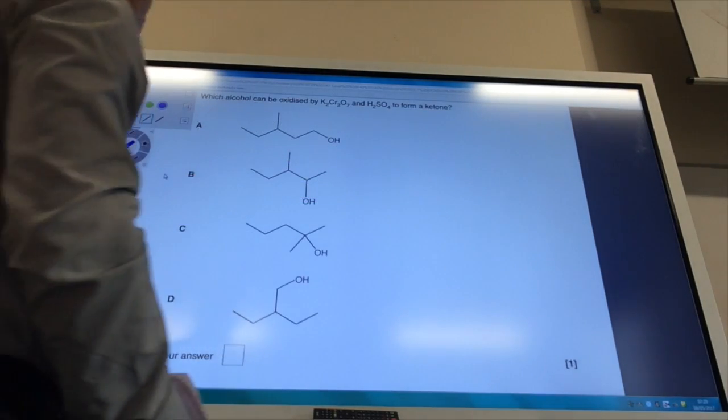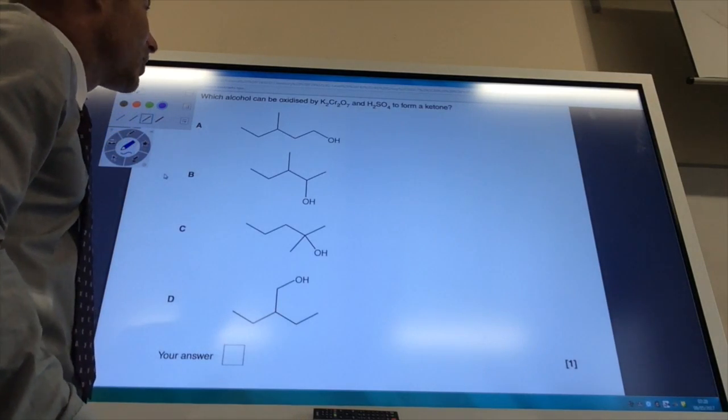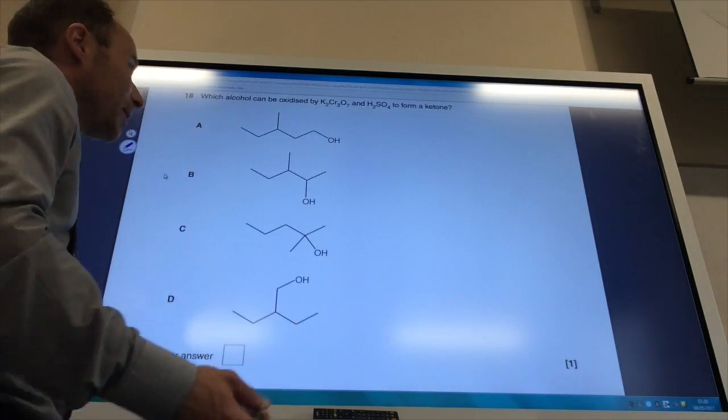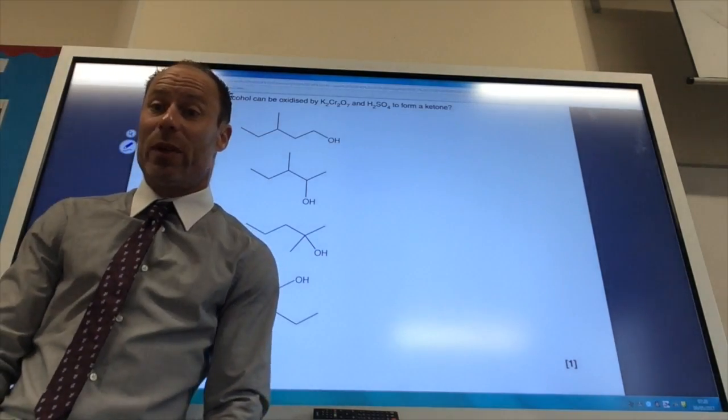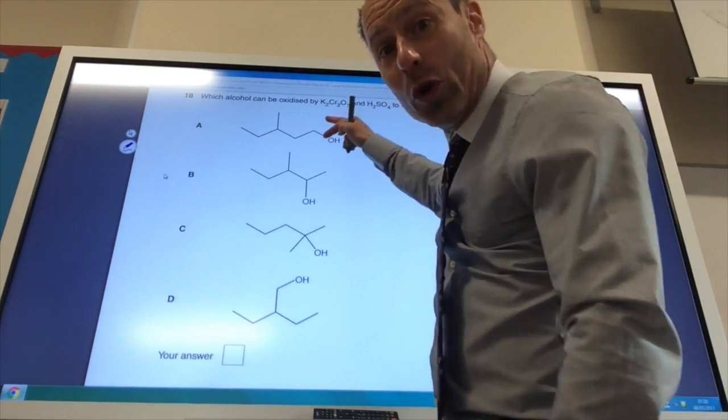Which alcohol can be oxidized by potassium dichromate and sulfuric acid to form a ketone? To form a ketone, I must start with a secondary alcohol, mustn't I? So this one's primary, so no.